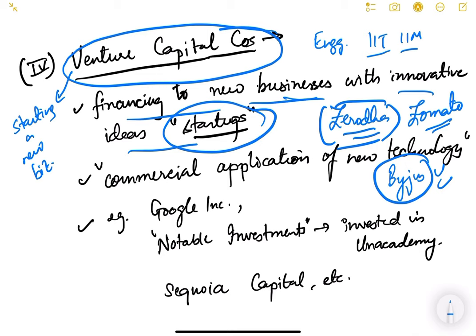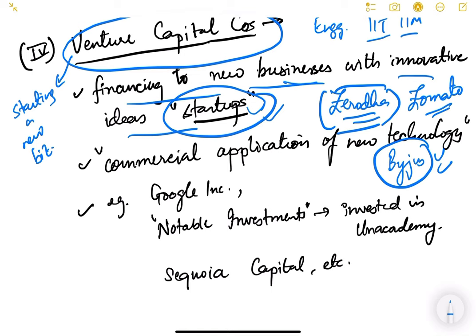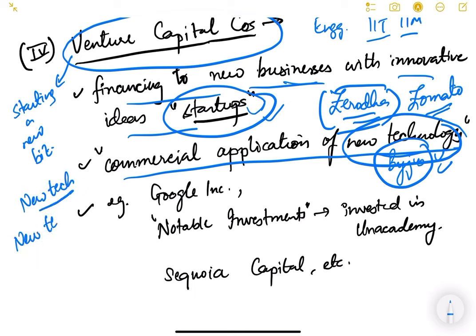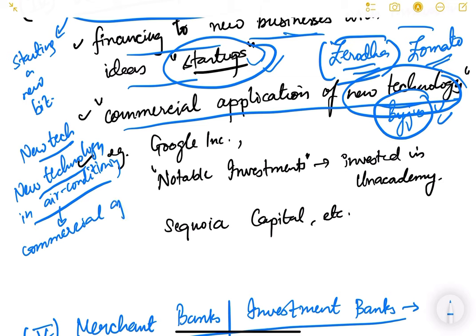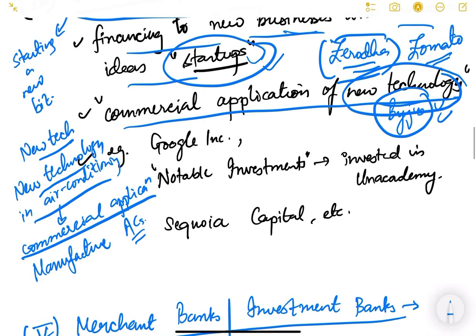These startup founders approach venture capital companies, which finance new startups if they are satisfied with the idea. Usually these startups involve commercial application of some new technology. For example, if there is a new technology in air conditioning developed in a laboratory but without commercial application, a group of people wanting to build a factory to manufacture ACs using this technology would need funding and would approach a venture capital company.